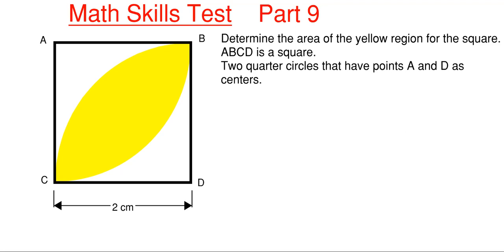What we have here is we need to determine the area shown in yellow for this square. We're given a couple pieces of information. We are told that ABCD is a square with a side of two centimeters, so each side is two centimeters.